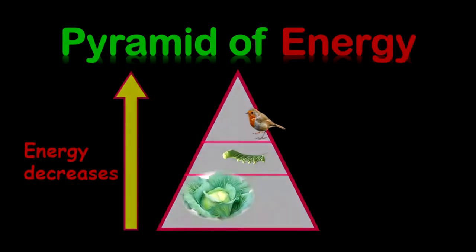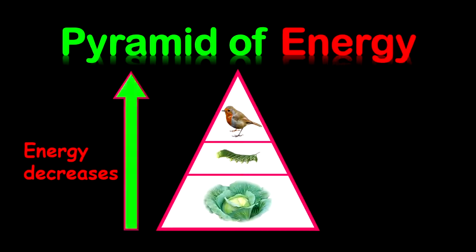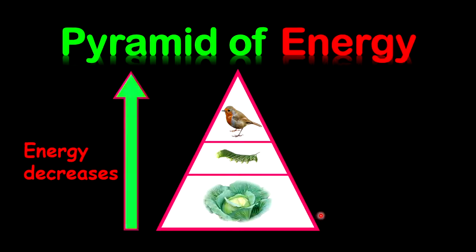Let's look at our pyramid of energy. The first thing I want you to note is that energy decreases along the food chain. The reason why energy decreases along the food chain is because each organism will use some of the energy for its own functions. So the cabbage, for example, will use energy for growth, development, and reproduction. Similarly, the animals will use some of the energy as well.